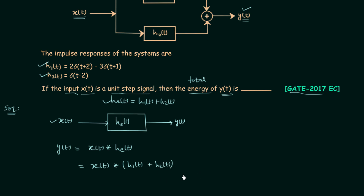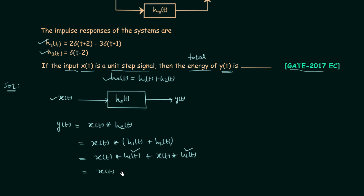Using the distributive law I can write: x(t)*H1(t) + x(t)*H2(t). We already know H1(t) = 2·δ(t+2) − 3·δ(t+1), so substituting this value, and H2(t) = δ(t−2), substituting that value as well, we get: x(t) convolved with [2·δ(t+2) − 3·δ(t+1)], plus x(t) convolved with δ(t−2).